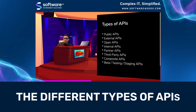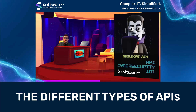Some of the other types of APIs that you might not be as familiar with include shadow APIs — those internal or public APIs that you created and use, but are trying to keep off the radar.